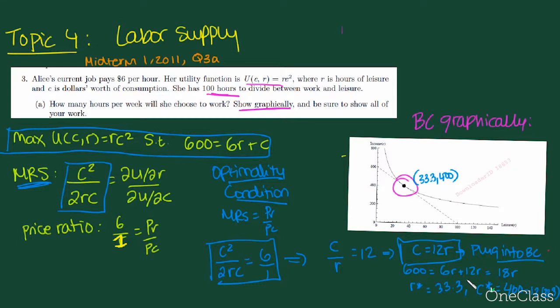It implies that C equals 12R. Plugging this into the budget constraint, we have 600 equals 6R plus 12R, which is 18R. And these are our optimal values of C and R, fairly well approximated on the graph. But notice the question asks how many hours per week she will choose to work. We know that the equation for working is L equals 100 minus R. So we know the optimal number of working hours is 100 minus 33.33, which is 66.67 hours.